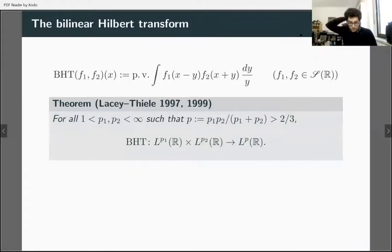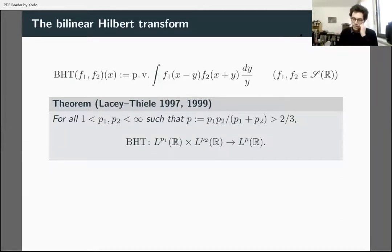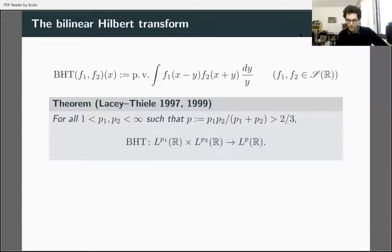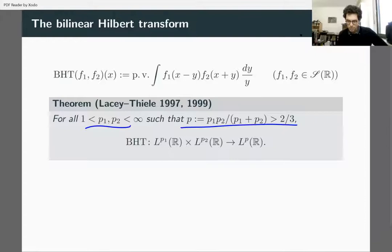What about the bilinear Hilbert transform? Lacey and Thiele, and many others who have done variations, showed that the bilinear Hilbert transform is bounded for a large variety of exponents — whether or not those exponents are sharp is not something I'll address. I'm primarily interested in the fact that it's true for a lot of exponents.